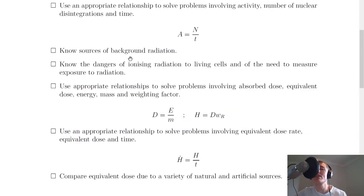It then says to know sources of background radiation. Remember that roughly 85% of all background radiation was from natural sources and the remaining 15% was from artificial sources. You need to be able to name some sources such as radon gas from the ground, food and drink, cosmic sources and so on.